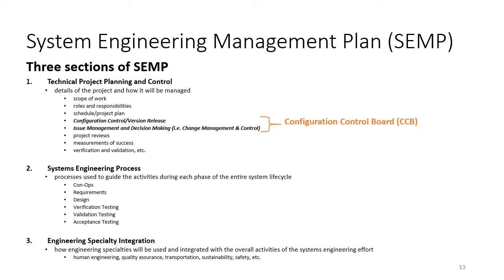The configuration control board is where difficult decisions are resolved, especially close to the end of the project development phase when deployment is near. The second SEMP section is engineering processes — the processes guiding all lifecycle activities: concept of operations, requirements, verification testing, and so on. The third section is engineering specialty integration, ensuring that safety analysis, human engineering, and quality assurance are all embedded in the design of the system.